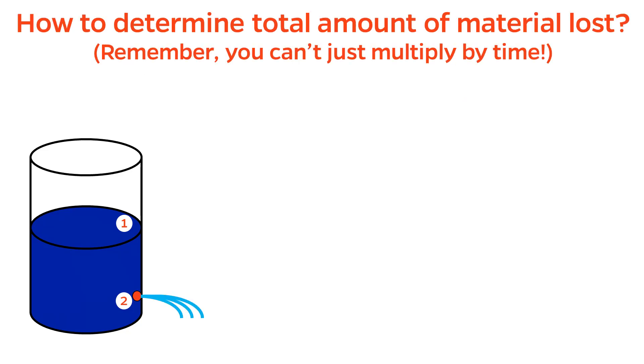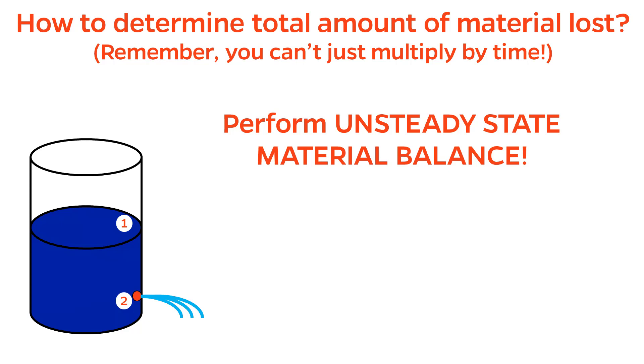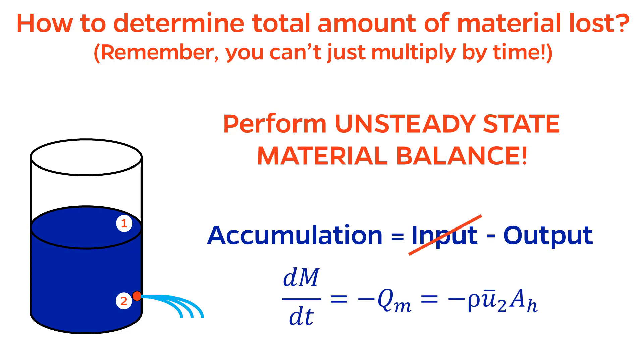Getting back to the main question at hand, how can we determine the total amount of material lost? Once again, the answer is found by applying a material balance. This time we need an unsteady state balance because of the time dependence. There is no reaction happening, well hopefully at least, so there is no generation or consumption terms. The balance is just accumulation equals input minus output. But actually, there is no input, so that term cancels as well.